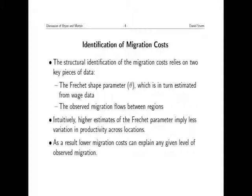From observed trade flows, you can back out how high trade barriers must be to replicate what we see. Here, the Fréchet shape parameter theta governs, as Gara has explained, how heterogeneous my earnings prospects are in different locations. It's an inverse measure: if the Fréchet parameter is very low, there's a lot of heterogeneity in how much I'm going to earn in different locations, so the opportunities from moving are very large. If the Fréchet parameter is very large, differences in productivity across locations are relatively small, so it doesn't really matter whether I work where I was born or move somewhere else. The estimate is going to be critical, and we combine this with the observed migration flows.